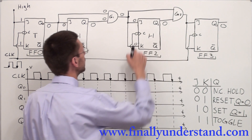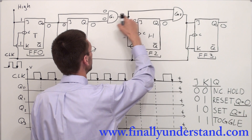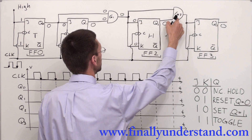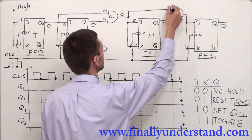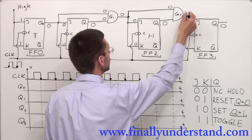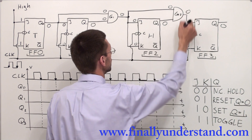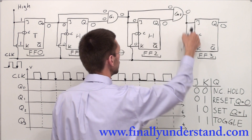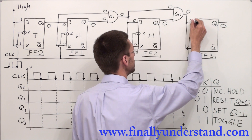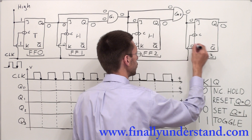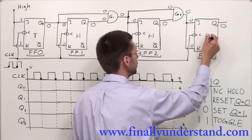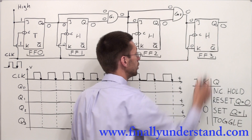The output of gate G1 is connected to the input of gate G2, which is receiving 0 and 0. Both 0s give me 0 on the output. This 0 goes to the JK inputs of flip-flop 3. Since J and K are receiving 0s, this flip-flop is also set to hold mode.